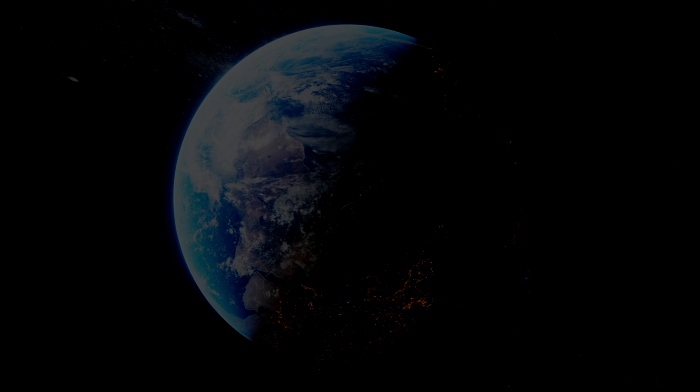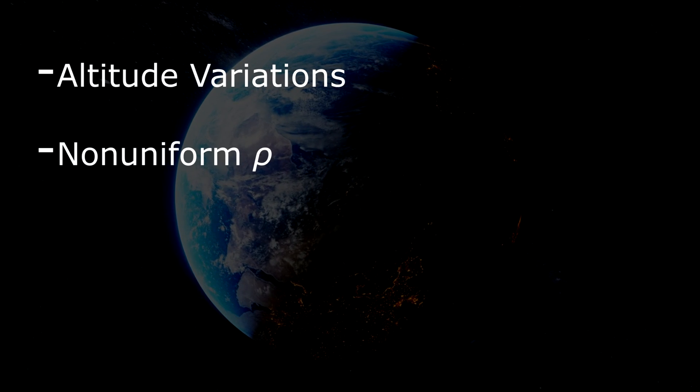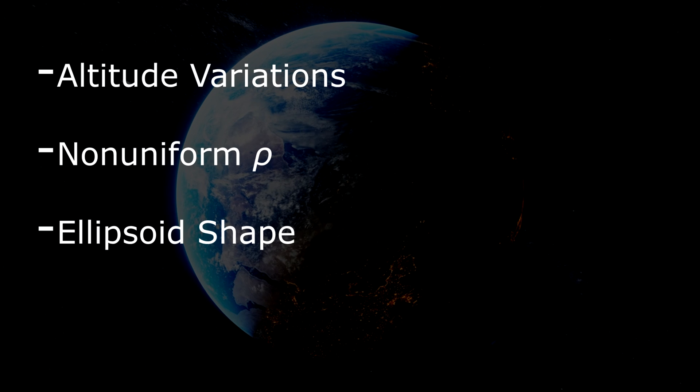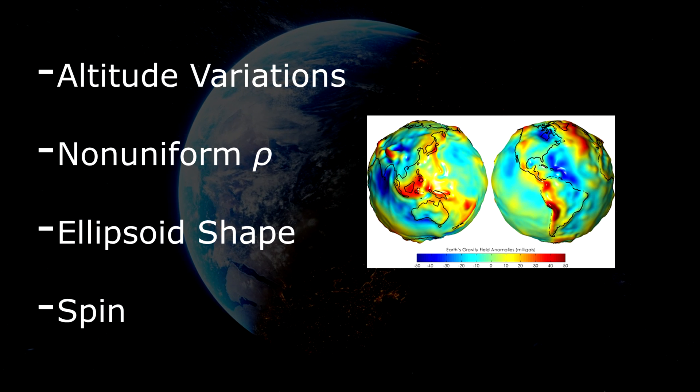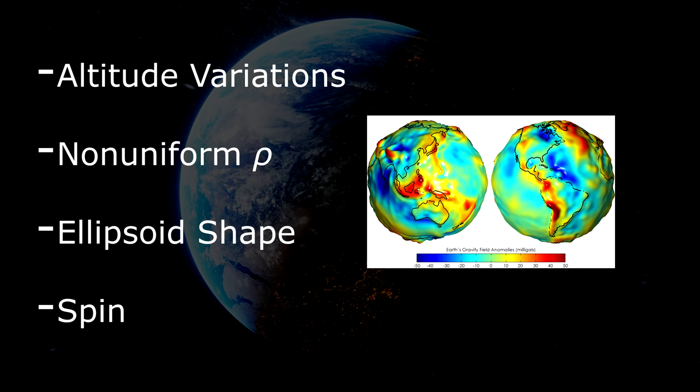However, because of the finer details of the Earth, including variations in altitude, its non-uniform mass distribution, its slight elliptical shape, and its spin, the apparent surface gravity actually changes slightly depending on location.